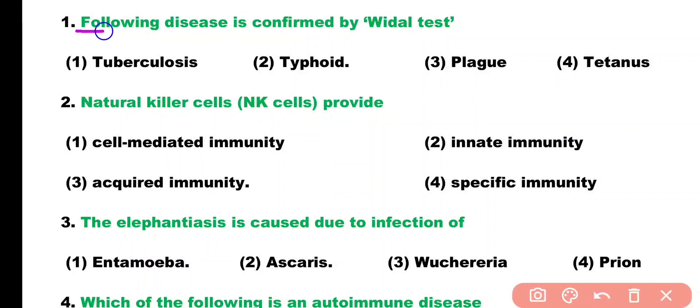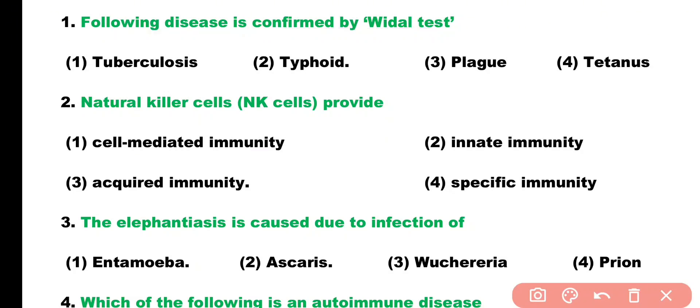Question number one: which of the following disease is confirmed by Widal test? Options: tuberculosis, typhoid, plague, tetanus. Correct answer is option two — Widal test is a confirmatory test for typhoid disease.